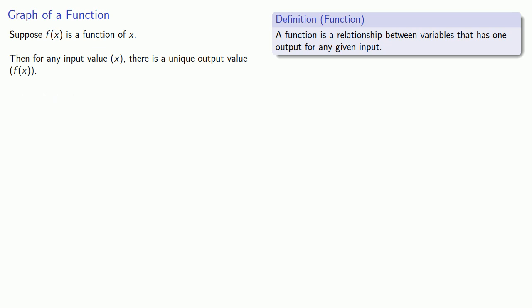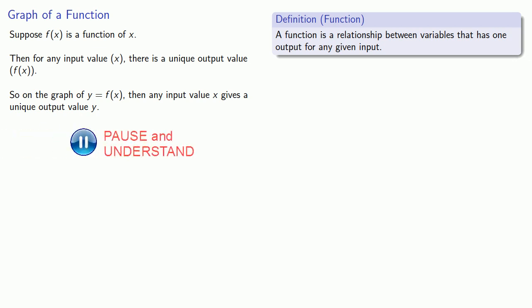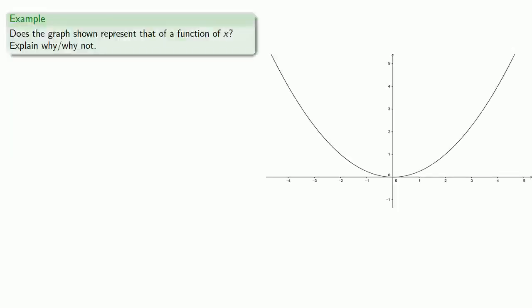Now if we look at the graph of y equals f(x), then any input value x gives a unique output value y. And what this means is that we can decide from the graph whether we have the graph of a function. So for example, we have a graph. Does the graph shown represent that of a function of x? Let's explain why or why not.